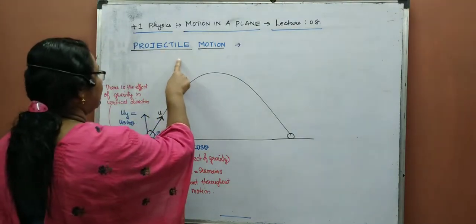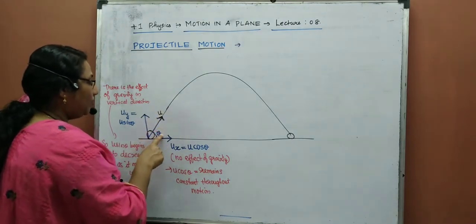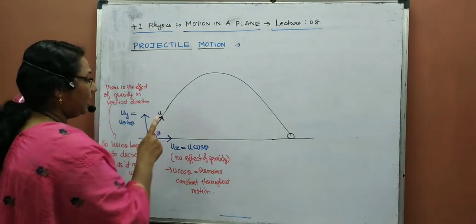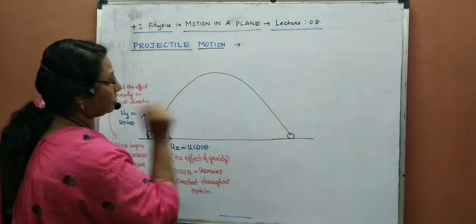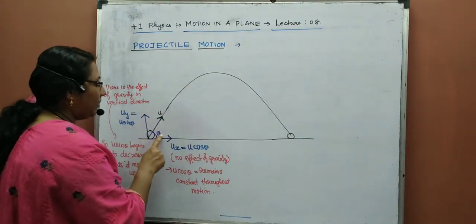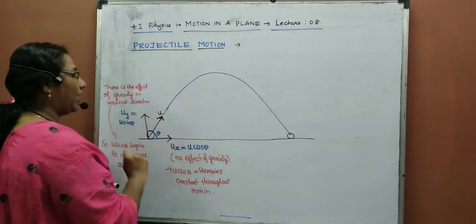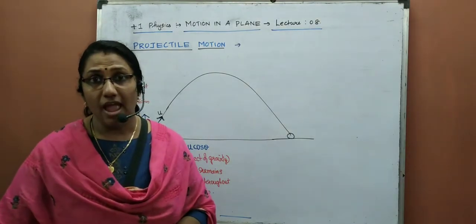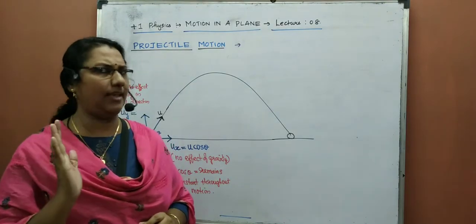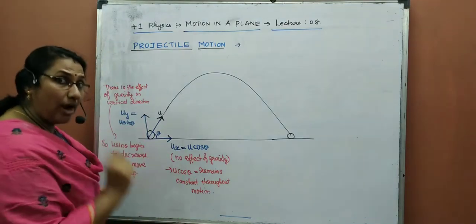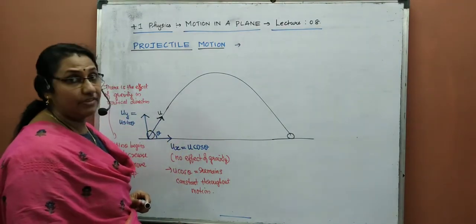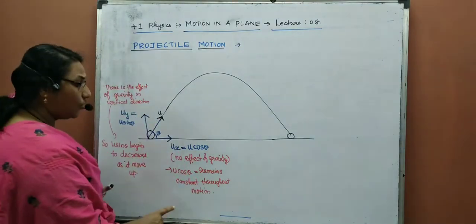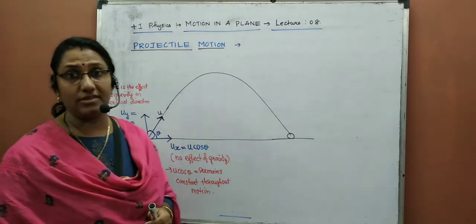So, the initial velocity can be resolved: ux = u cosθ in horizontal direction and uy = u sinθ in vertically upward direction. The motion is purely under the influence of gravity, neglecting air resistance. u cosθ remains constant throughout the motion because there is no effect of gravity in the horizontal direction.